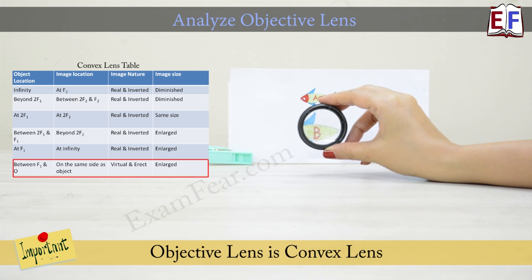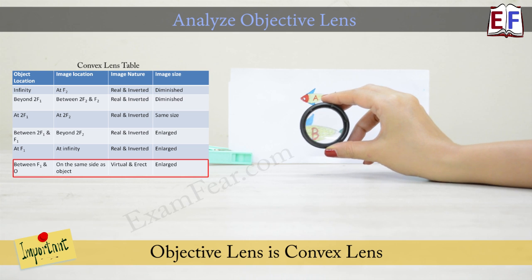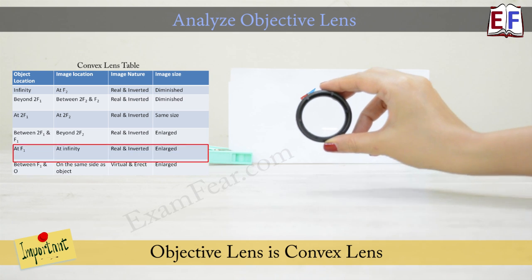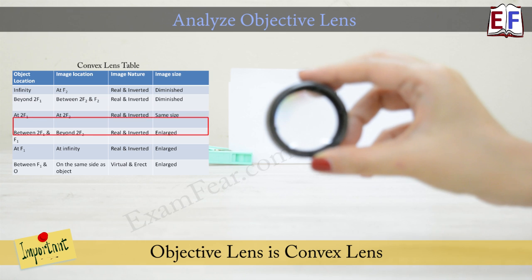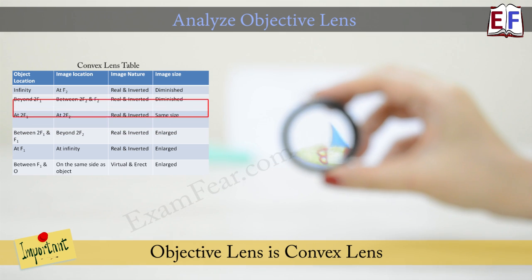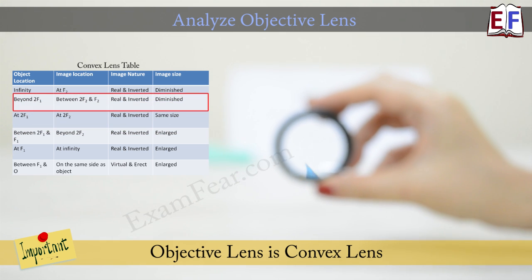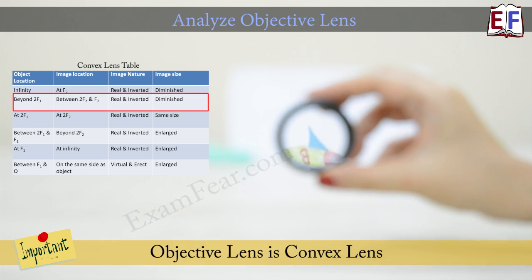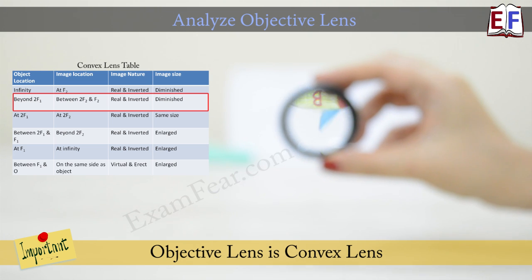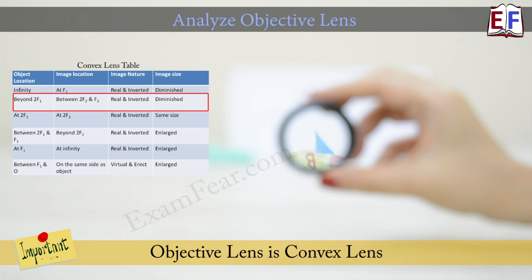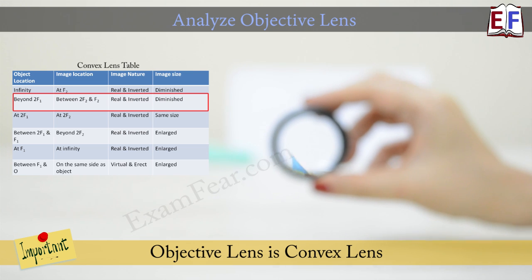Let us now compare this observation with the image formation by convex lens. We see that when the object is very close to the lens, the image formed is erect and enlarged. And as we move the object away from the lens, we get an inverted image. So this observation complies with this table which we see here, which clearly proves that the objective lens is a convex lens.